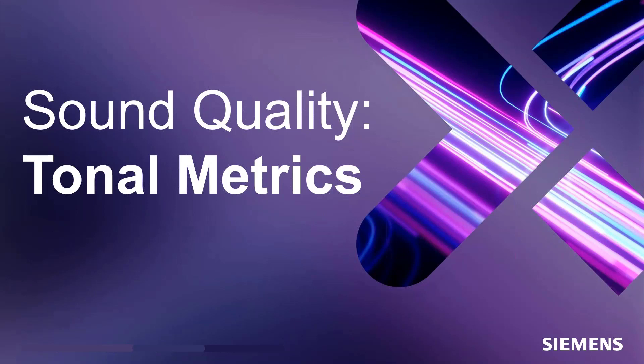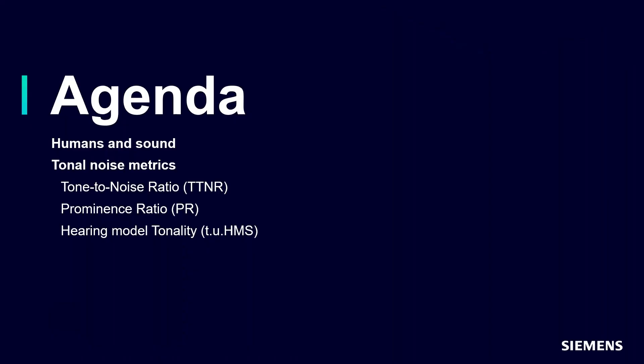We're going to talk about sound quality, specifically tonal metrics designed to help us work on tonal noises and assess that issue. For our agenda, we'll take a brief review of what sound quality and these metrics are, and review some critical aspects of human hearing. Then we'll talk about the three popular tonal metrics: tone to noise ratio, prominence ratio, and psychoacoustic tonality, which was new in the 2018-2019 timeframe.